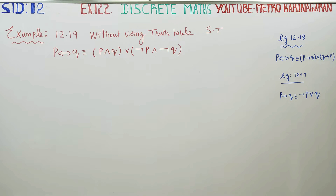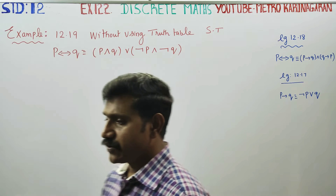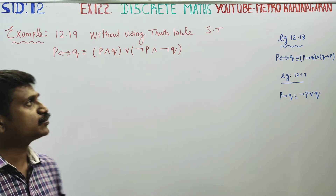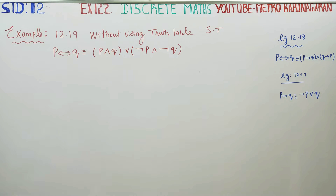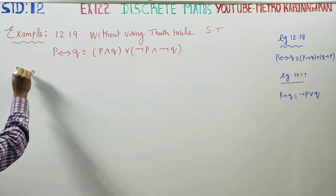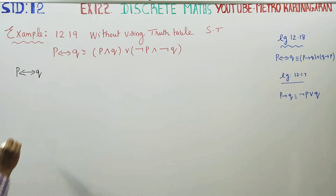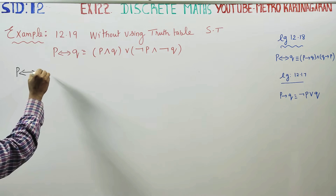Dear 12th standard students, in exercise number 12.2, example 12.19, without using the truth table, you have to prove that P if and only if Q is equivalent to this answer.